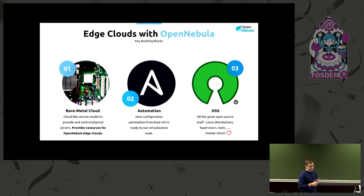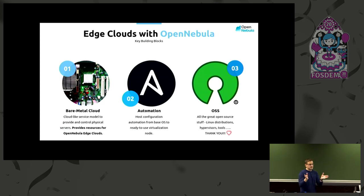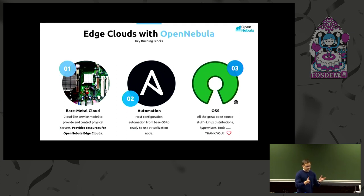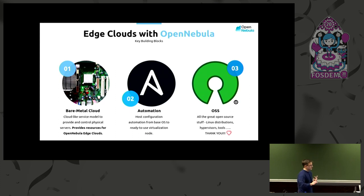We rely on the existence of a bare metal cloud. OpenNebula never installs the physical host's operating system and it won't. We expect there is some service provider which manages the infrastructure and is able to give users the resources to build the edge cloud. The second important part is automation — everything is automated. On bare metal cloud, that's the provider's duty, but on the host level everything is automated: hypervisor is installed, operating system is configured to run as part of a virtualization cluster. We just take all the great open source tools — distributions, hypervisors — and put them together to build an open source edge cloud.